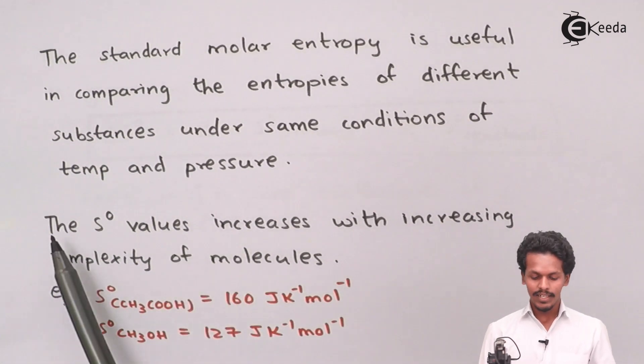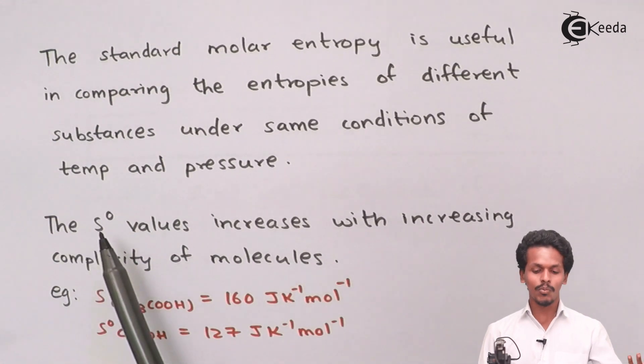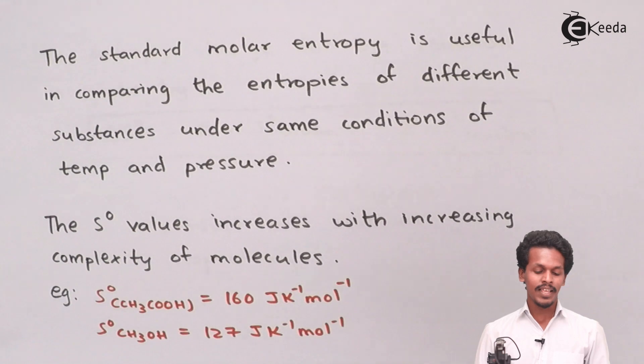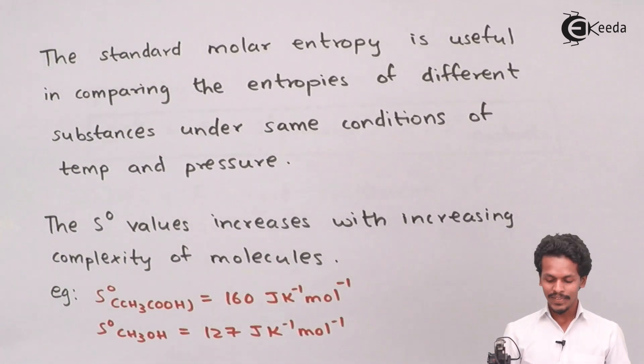The standard molar entropy value increases with increasing complexity of molecules. As we can see, the entropy of acetic acid is 160 joules per Kelvin per mole, and that of a smaller compound, methanol, is 127 joules per Kelvin per mole.